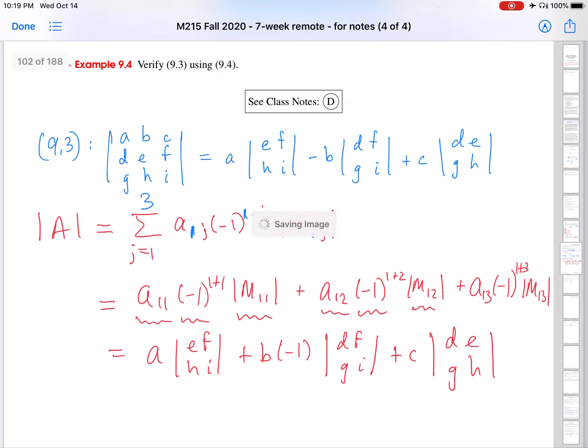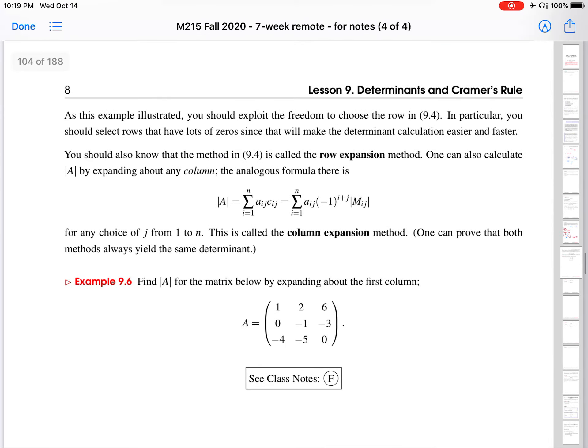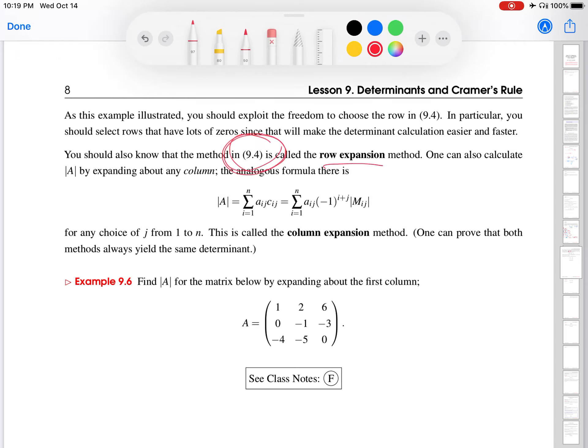One last thing that I will mention that appears later in these notes. So like I say here, the definition that I just focused on, 9.4, is a row expansion because you can pick any i value you want, and i's correspond to rows in our notation. But there is a similar definition where you can pick any column you want. So in this definition, you are adding along the rows and the j value, the column value, is fixed. So you can choose any column value you want. This is a column expansion method.